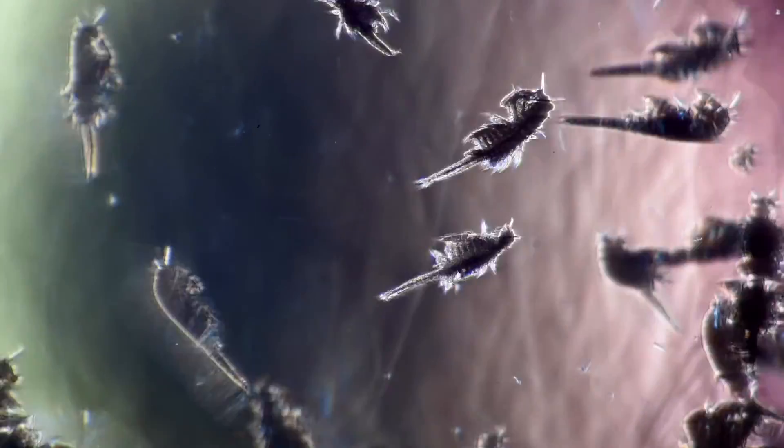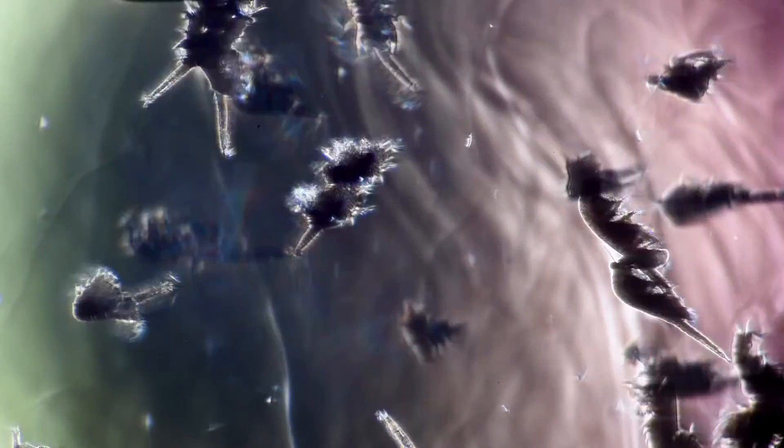These aren't special effects. These are real images of brine shrimp undergoing what's called a vertical migration. So we have a tank of brine shrimp. They are representative of marine zooplankton such as krill in terms of their size and their swimming mode.